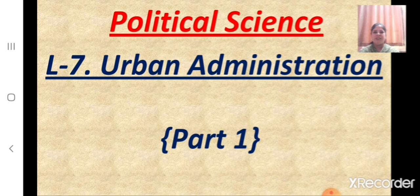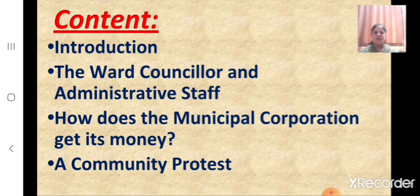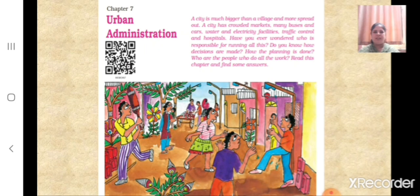Children, in this lesson we shall learn that urban administration is required to provide basic amenities like street lights, garbage collection, and water supply. We shall learn about the role, responsibilities, and duties of the urban administration in making sure that the city functions smoothly — including the role of the ward councillor, the administrative staff, how the municipal corporation gets its money, and about a community protest. This lesson we shall learn with the help of a story of four children.